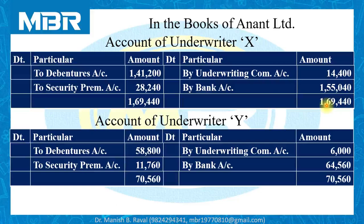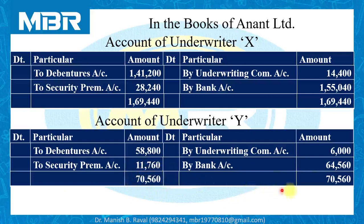For underwriter Y's account: Debit side — to 12% Debentures Account rupees 58,800 (588 × 100) and to Security Premium Account rupees 11,760 (588 × 20). Credit side — by Underwriting Commission Account rupees 6,000 and by Bank Account rupees 64,560. Both sides total rupees 70,560. This completes the calculation, journal entries, and ledger posting as required in the question.